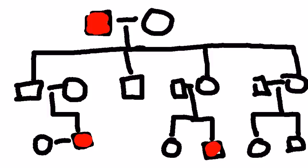The question is: what is the type of inherited disorder? The answer choices are X-linked recessive, X-linked dominant, mitochondrial, and autosomal dominant. When I look at this pedigree, there are two answers I can cross off immediately. One thing that stands out is that every affected individual is a male — and that's important.